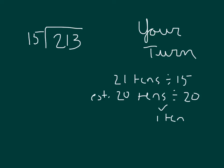And that's why that 1 goes directly above the 1 within the 213. 1 times 15 is 15. 21 minus 15 is 6, and that's 6 tens that we regroup to the ones place. To put it together, we get 63 ones.